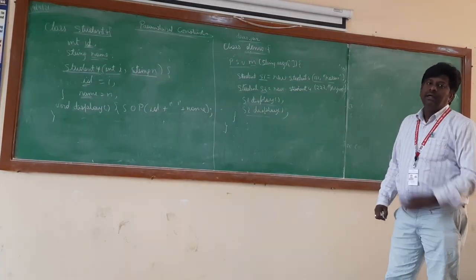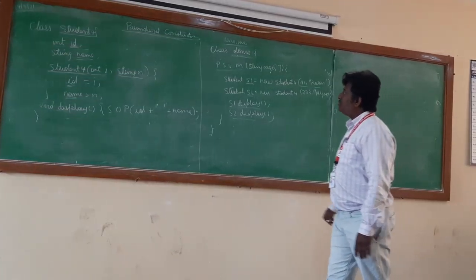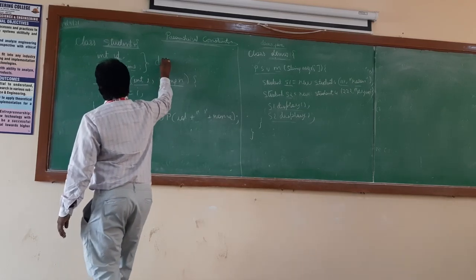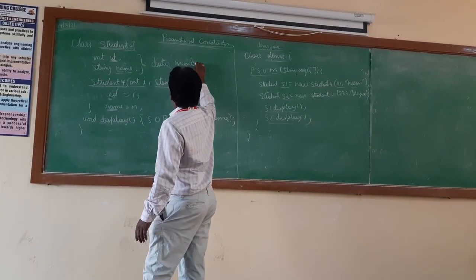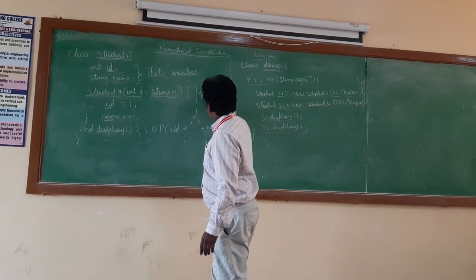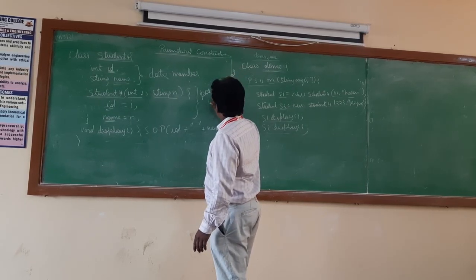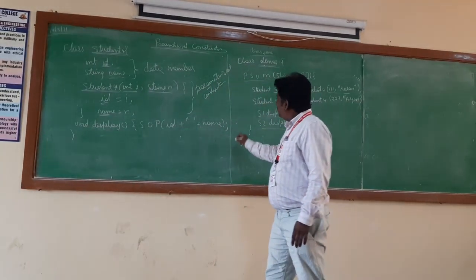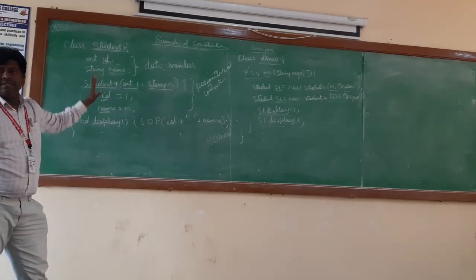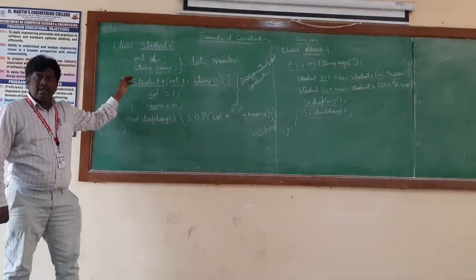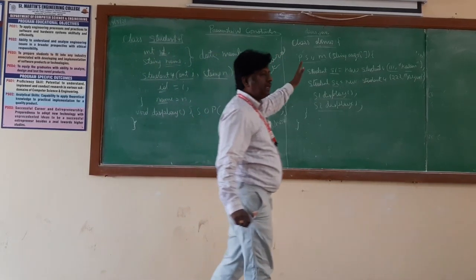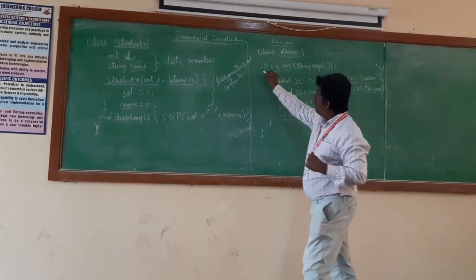As soon as the object is created, this constructor is invoked, and here we are passing the arguments. These arguments are assigned to the values of id and name. Let me explain this program. A parameterized constructor is simply a constructor which takes parameters. A class will have data members and methods, and a constructor is also a special method having the same name as the class.